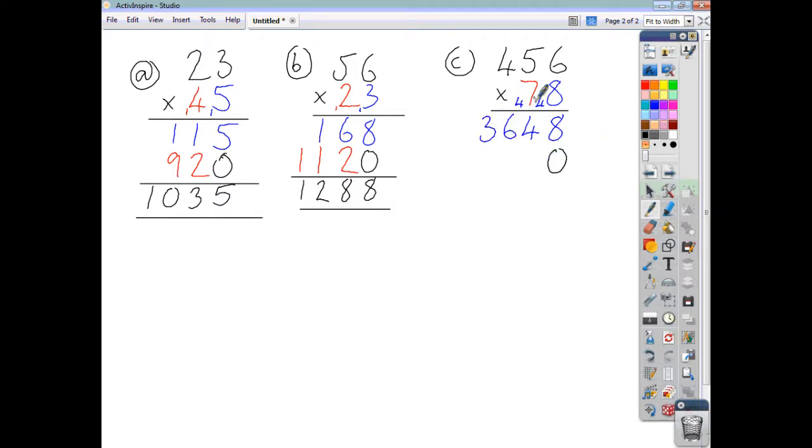We'll write a 0 to show that our 7 here represents 70. So 7 sixes, 42. 7 fives, 35. Add the 4, that's 39. And 7 fours, 28. Add the 3, you get 31.